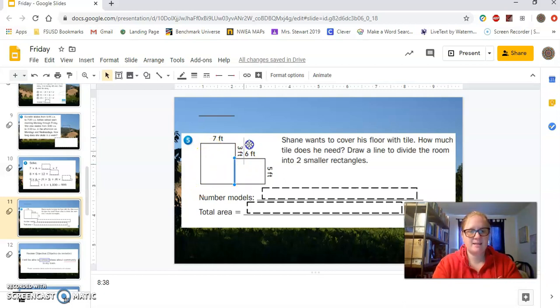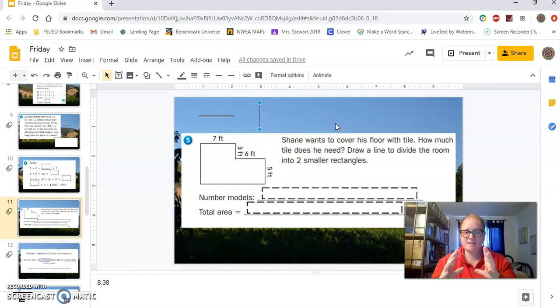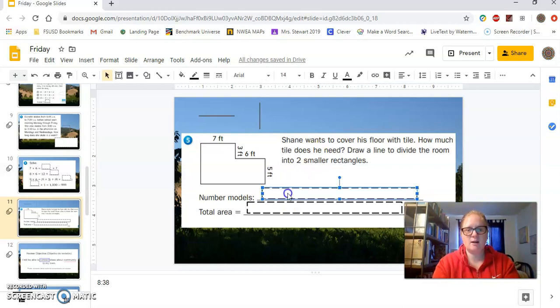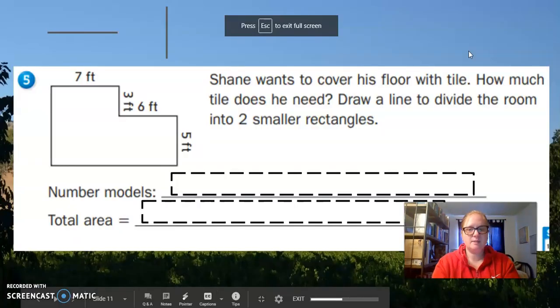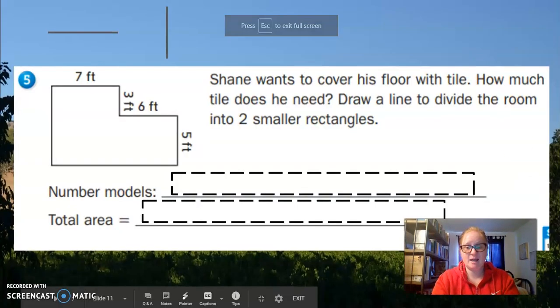After you find the area of both of those smaller rectangles, then you add them together to get your total area. And the number models that you would use are the area for one rectangle plus the area for the other rectangle. Please contact me if you need any help with this.